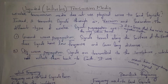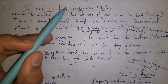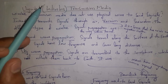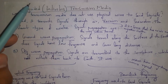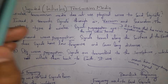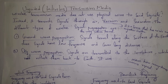Next is unguided transmission media, also called wireless transmission media. For example, turning on Bluetooth and transferring files from mobile to laptop is wireless transmission. Another example is a TV remote — both the TV and remote are connected wirelessly. These are examples of unguided transmission media.